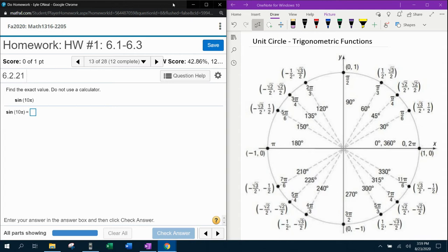So since we're looking for sine of theta, theta is an angle, sine is y. That means we're looking for the y coordinate of the ordered pair at 10π. 10π is not in this circle, so I'm going to show you how to get to it.